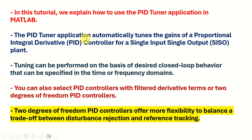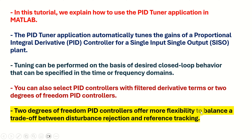The PID tuner application automatically tunes the gains of a proportional integral derivative, or briefly PID controller, for a single input single output plant or single input single output dynamics. Tuning can be performed based on desired closed loop behavior specified in the time or frequency domains. You can also select PID controllers with filter derivative terms or two degrees of freedom PID controllers, which offer more flexibility to balance a trade-off between disturbance rejection and reference tracking.